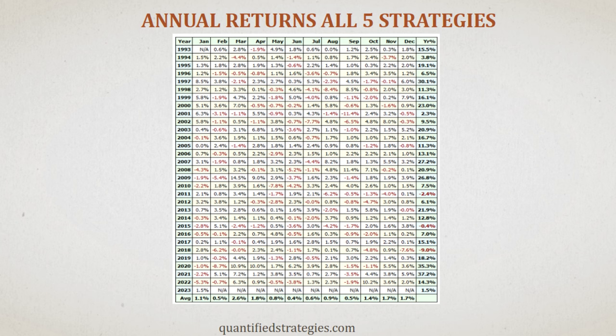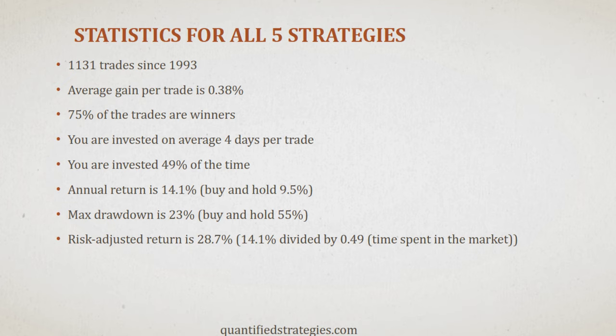In bad years like 2008 and 2022, the strategies went on to make 20.9% and 14.3% respectively — and our strategies only trade from the long side. A bear market is not only good for short strategies; short-term long trades also tend to improve due to increased volatility. The 1,131 combined trades returned an average of 0.38% per trade, amounting to a compounding annual return of 14.1% — significantly better than buy and hold, even though the strategies are invested only half the time. This shows the power of combining strategies, and the results can be improved further.